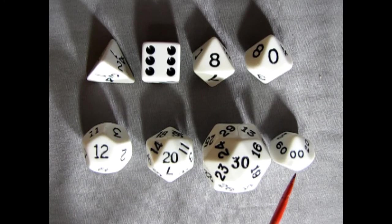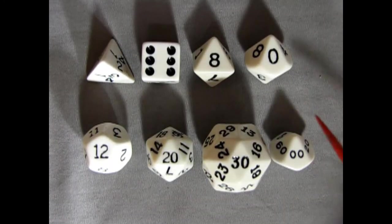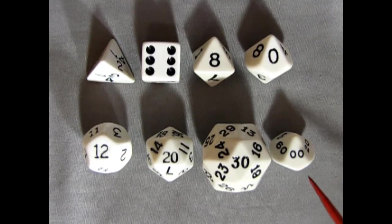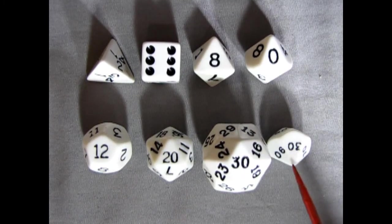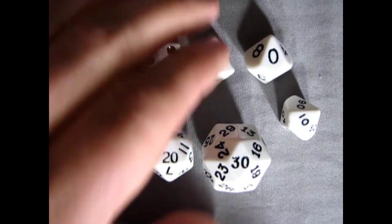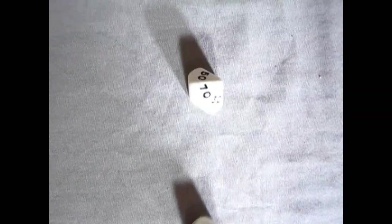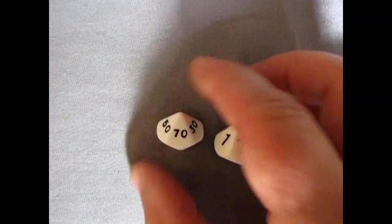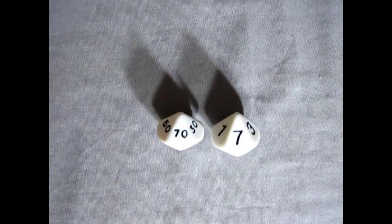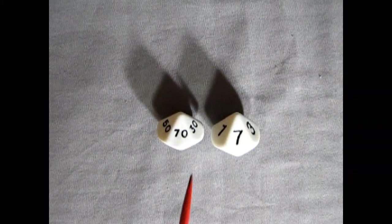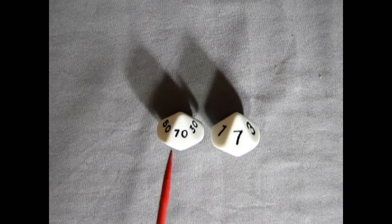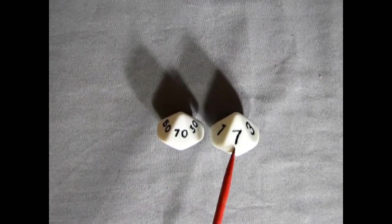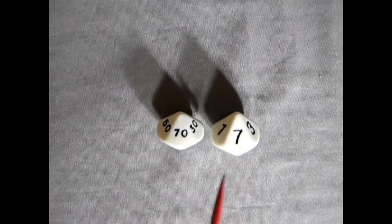And then this funny one here with the double zeros is a percentile die. And you would use that in conjunction with your d10. So this one, of course, is your top numbers. So if I just turn this, you can see there it says 30 or 90 or whatever. So just clearing these out of the way to find out a percentage, you can go like this. So we have 77 percent. So on some of those things in the old dungeon master guide, let's say you need 77 percent, you could do it this way instead of trying to do it on a d20. This one will give you your tens and your one places.